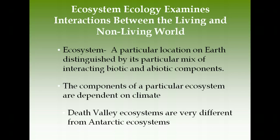In chapter 3 we start by defining what an ecosystem is: a location on earth distinguished by its interacting biotic and abiotic components. Biotic refers to anything living — animals, plants, insects, bacteria. Abiotic factors include sunlight, temperature, soil, water, and nutrients. The components of an ecosystem are highly dependent on climate.